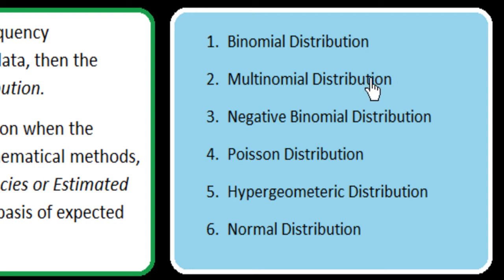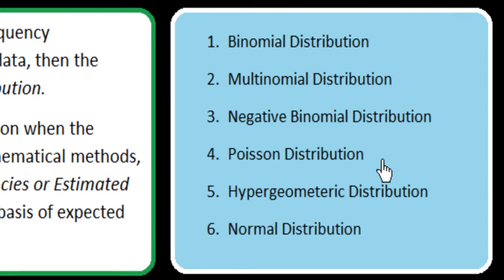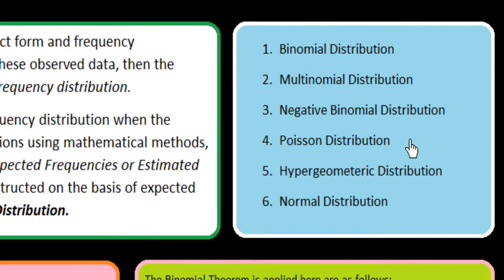The binomial distribution, also known as the Bernoulli distribution, is associated with the name of Swiss mathematician James Bernoulli. He was born in 1654 and expired in 1705, but it was published in 1713, eight years after his death. The Bernoulli distribution is a discrete theoretical distribution expressing the probability of one set of dichotomous alternatives — success or failure.